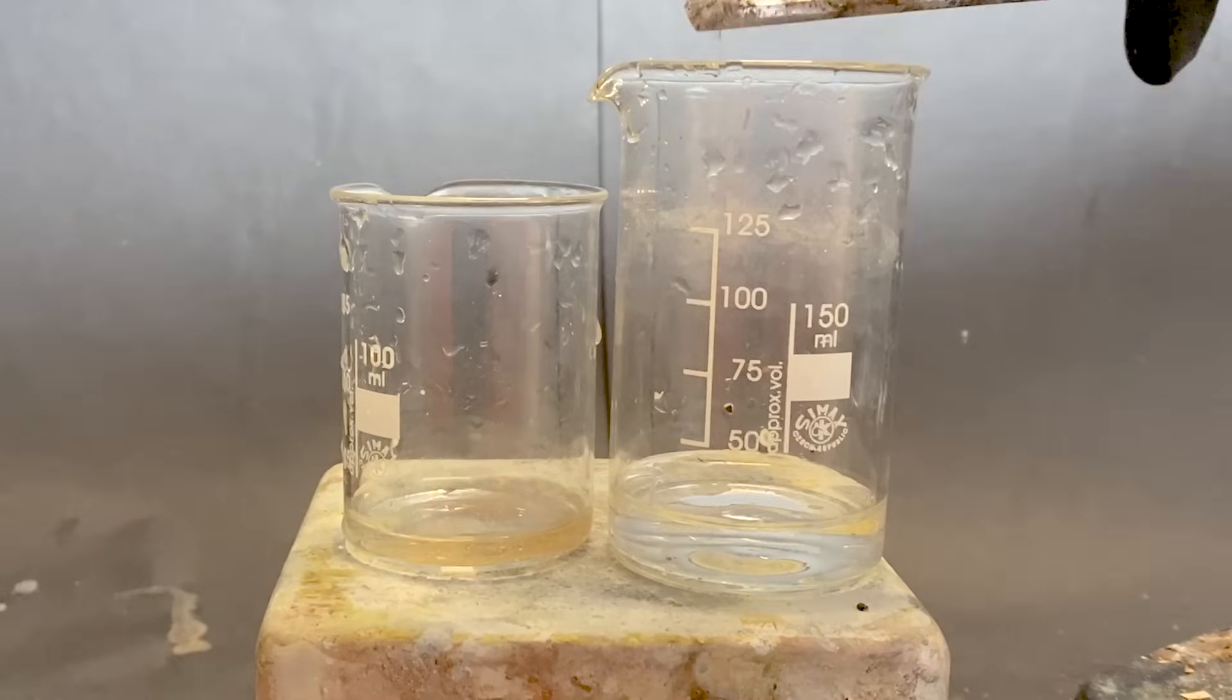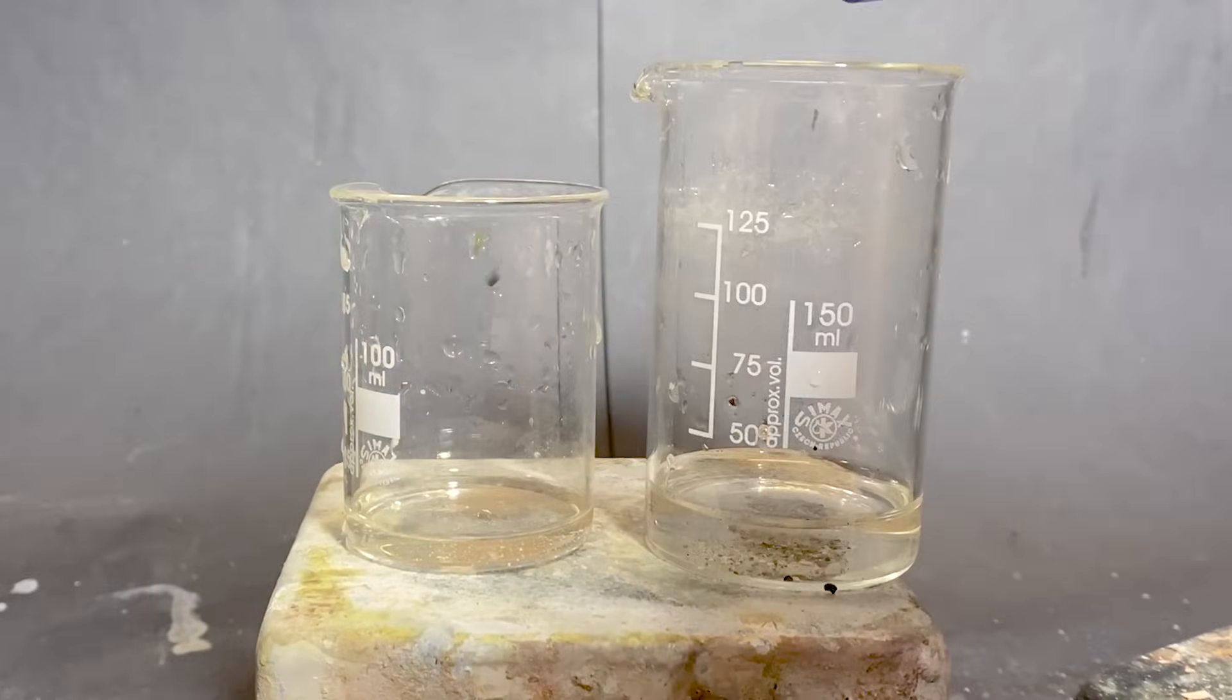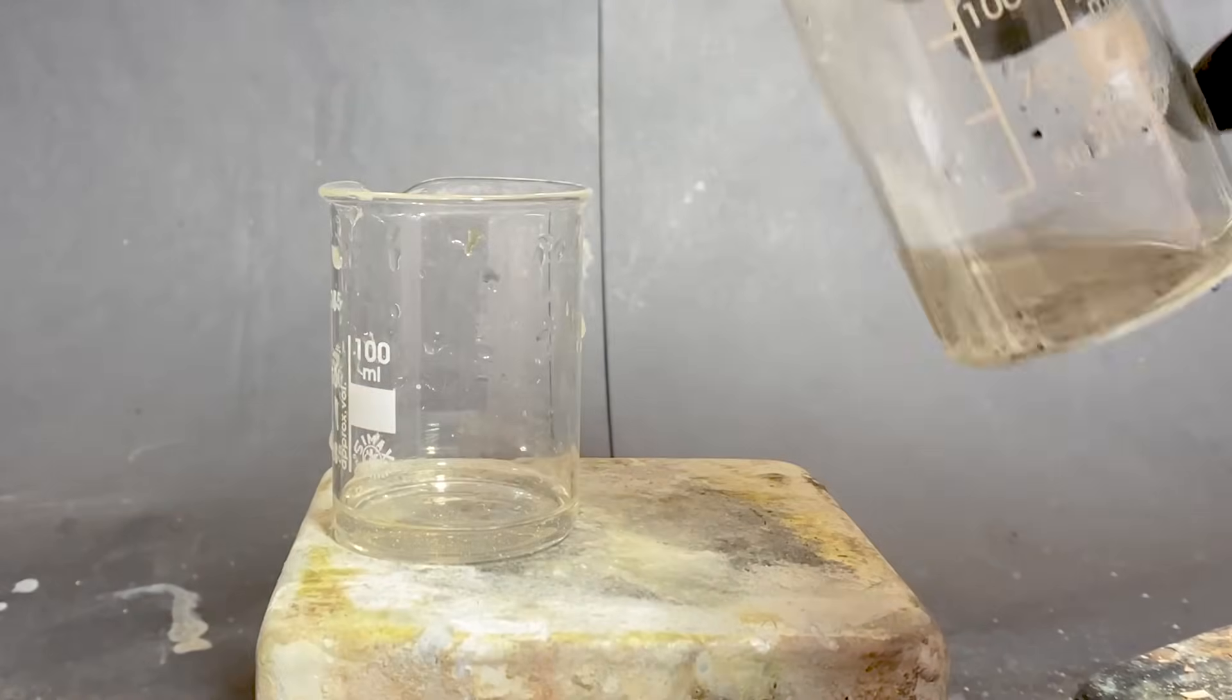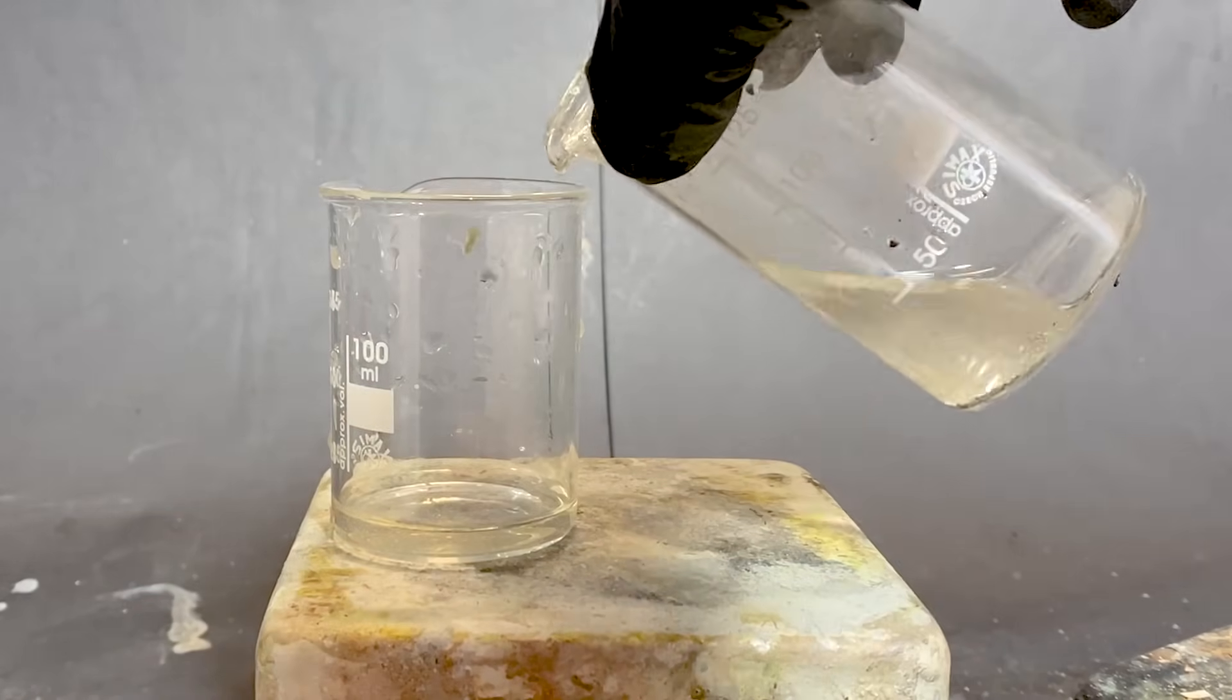To confirm that the reaction indeed happened, I dissolved some of the slug into some nitric acid, and then I poured all of that into a silver nitrate solution. If there's a yellow precipitate, then that means that we did it.